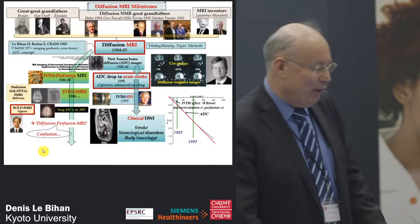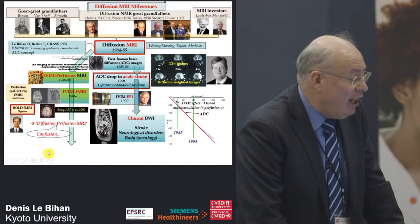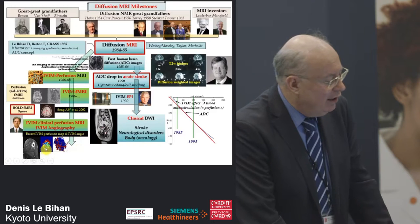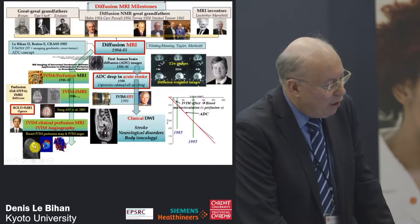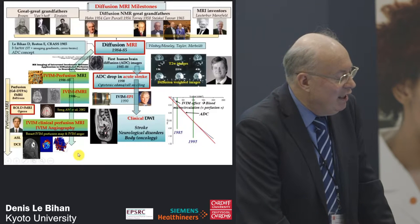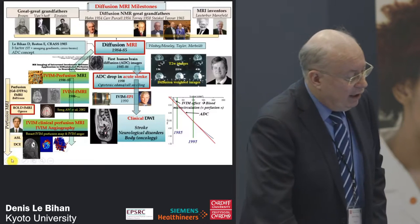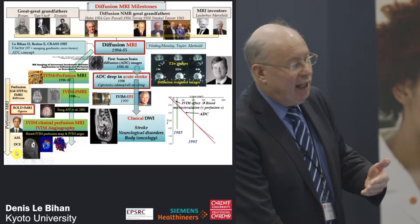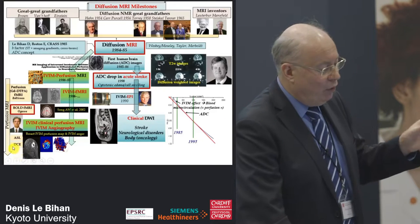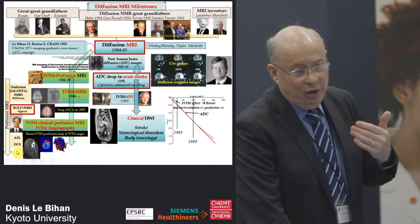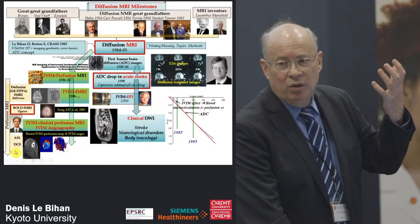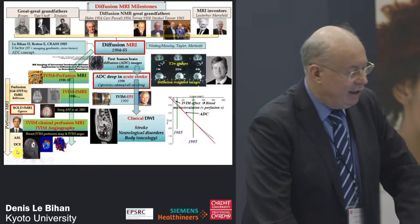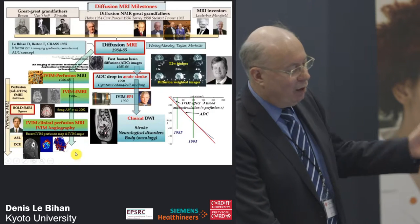Nowadays you can do perfusion imaging with IVIM — it's developing a lot. These are perfusion maps obtained in the breast; you can even do angiography with IVIM. At the same time, perfusion MRI has developed with contrast agents and ASL, but today people have concerns about contrast agents because gadolinium chelate deposits have been observed in brain tissue with repeated exposure. I think IVIM has great potential as a result.